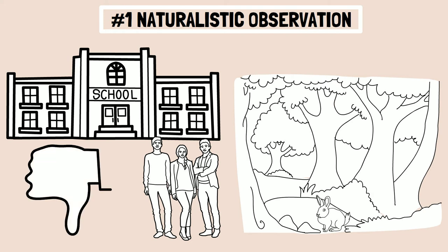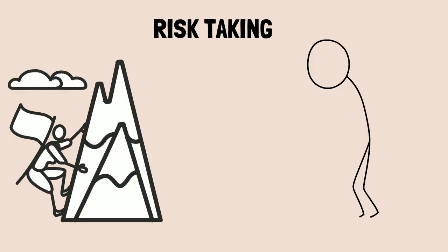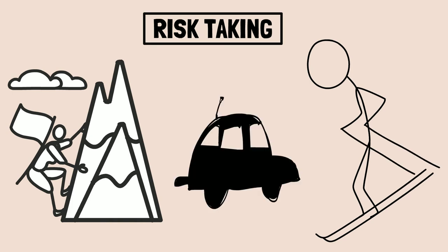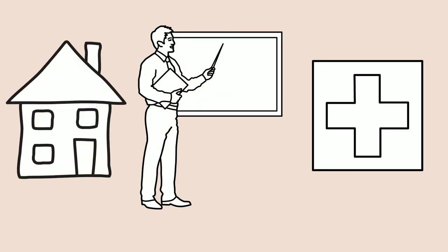In this case, the observer makes no effort to control or manipulate the situation for making an observation. For example, you may want to study risk-taking behaviors in teenagers. You might choose to observe behavior in different settings, such as a rock climbing wall, an ice skating rink, or a bumper car ride. After you operationally define risk-taking behavior, you would observe your teen subjects in these settings and record every incidence of what you have defined as risky behavior. This type of observation is conducted in hospitals, homes, schools, and daycare centers.